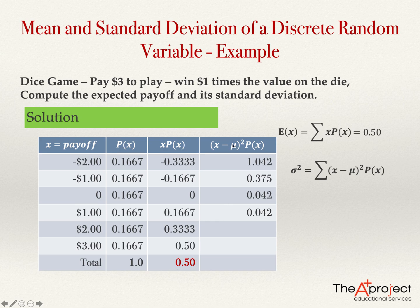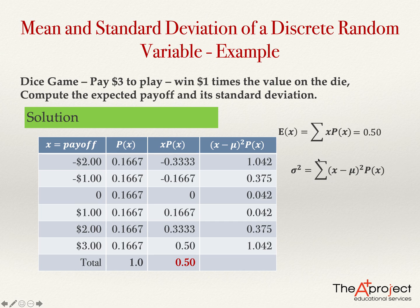For x = 2: (2 - 0.5) squared times 0.1667 gives 0.375. For x = 3: (3 - 0.5) squared times 0.1667 gives 1.042. Adding together all these values — 1.042 + 0.375 + 0.042 + 0.042 + 0.375 + 1.042 — gives the variance of 2.917.